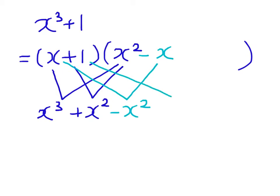x², and then 1 times -x gives -x. Again we have another outstanding term of -x, and therefore we need to add x.